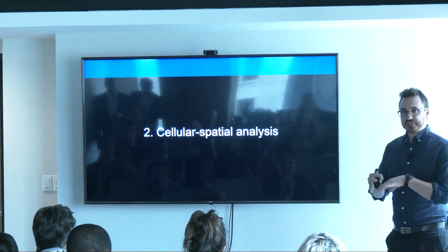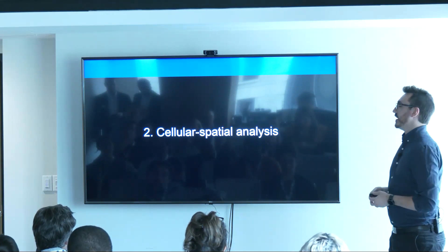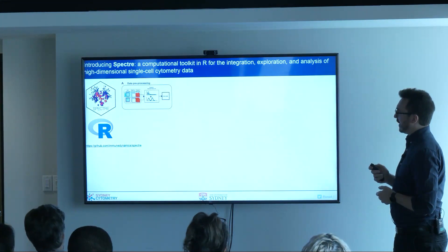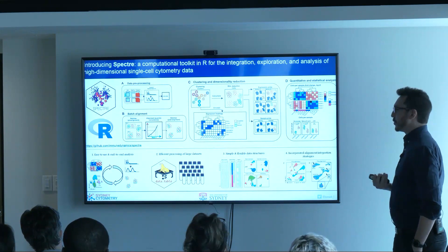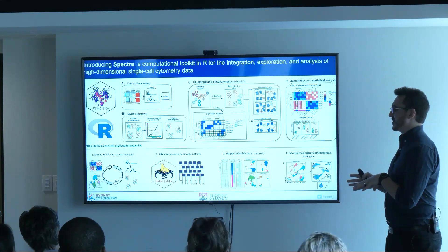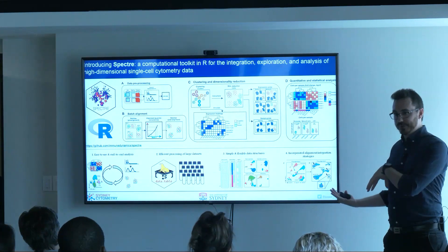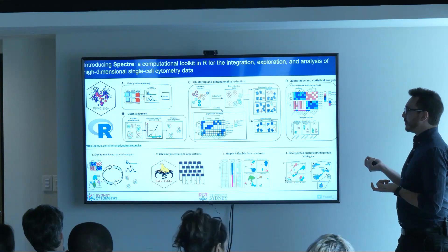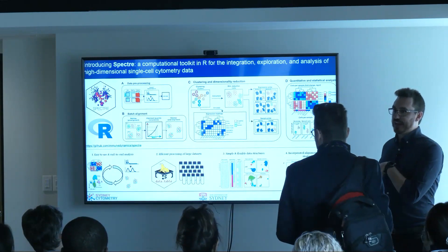Once we have our segmentation — each cell has a boundary we can work with, regardless of whether we've used our method or a different one — we want to pull this together to do some analysis. We have a toolkit called Spectre for our cytometry data analysis. It was developed to do flow or CyTOF and now single-cell genomics datasets, prioritizing simple data structures and workflows that make data analysis scalable for really enormous datasets.